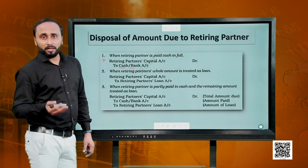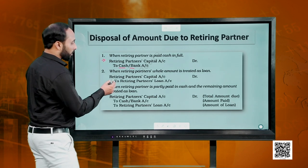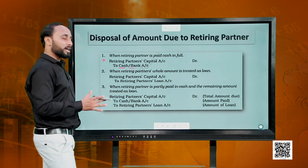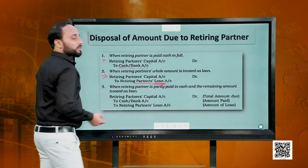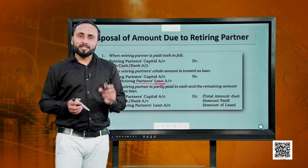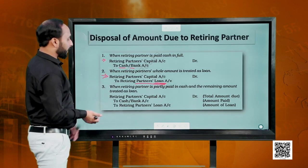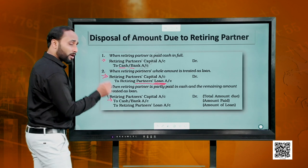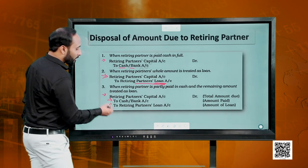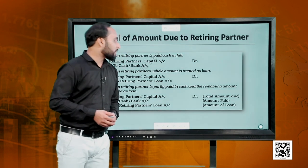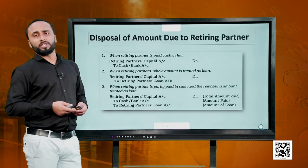We might not pay the partner right now — we may want to pay later. So we convert the dues of that partner into a loan because we have to close his capital account — he is not a partner anymore. We debit the capital account and transfer that amount to his loan account. There can also be a scenario where we make a partial payment and transfer the rest to the loan account, combining the entries: credit cash for the amount being paid and credit the partner's loan account for the remainder.